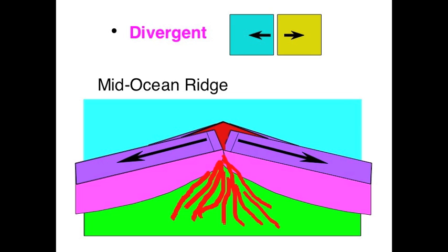The other type of boundary is a divergent boundary. The prefix 'di' means two, and if you're diverging, you have two things moving apart — hence the name divergent. This is very common when we have new land forming between two plates moving in opposite directions. The best known example is the mid-ocean ridge, where new crust is formed every time the plates diverge or move apart.